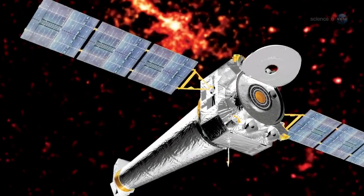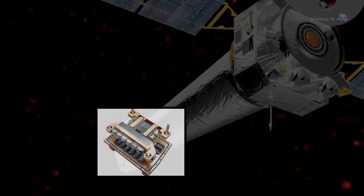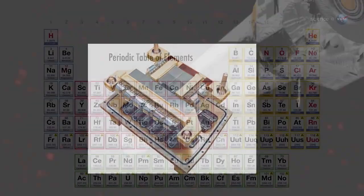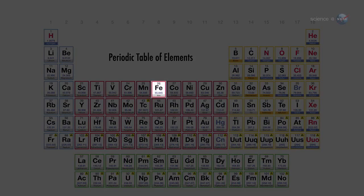The researchers scanned Cass A using Chandra's advanced CCD imaging spectrometer. This revealed concentrations of iron, sulfur, silicon, magnesium, neon, and oxygen.